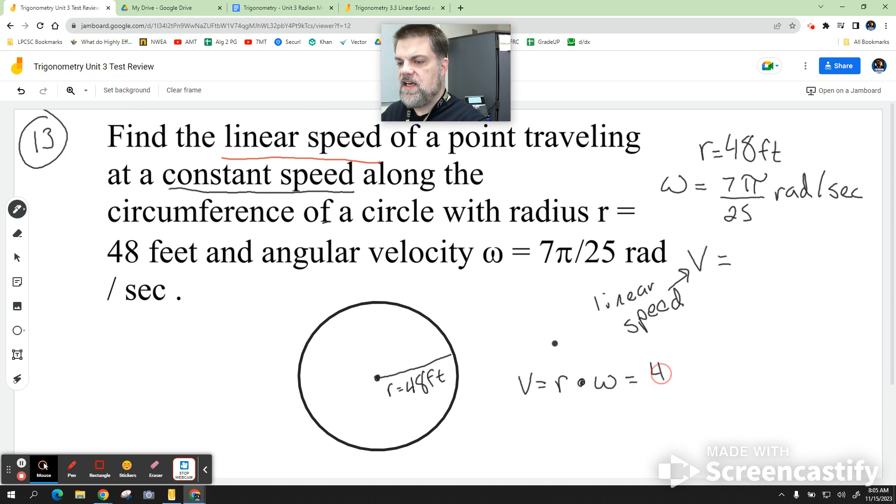Which is 48 feet, right? Times the angular speed, which is 7 pi over 25. And that's basically it. But this is radians per second. So, let me write that this way. So, this is radians per second.